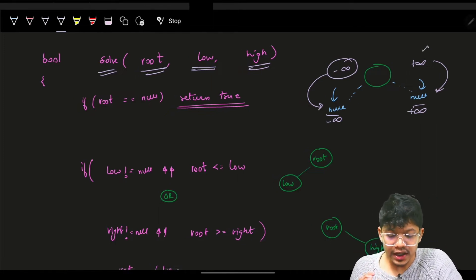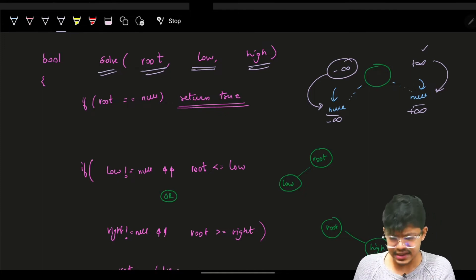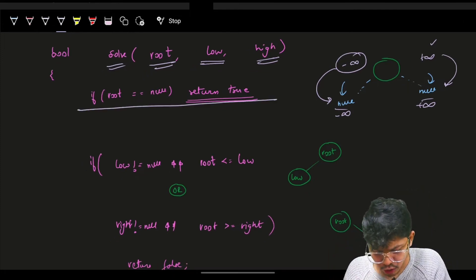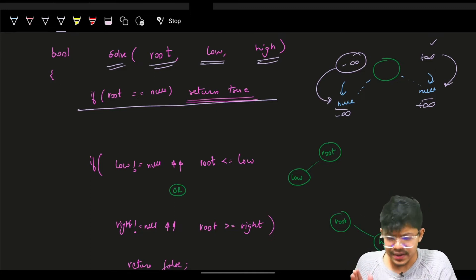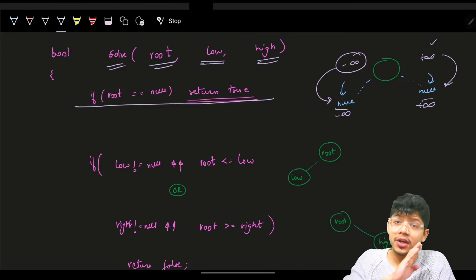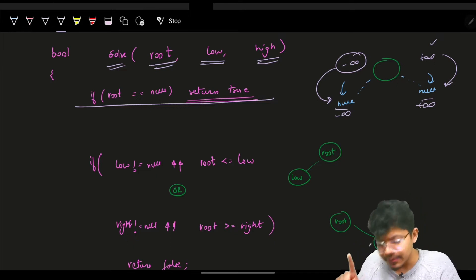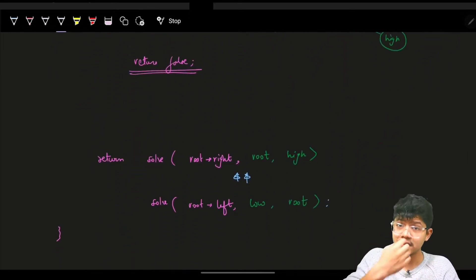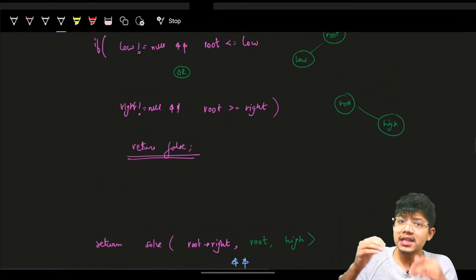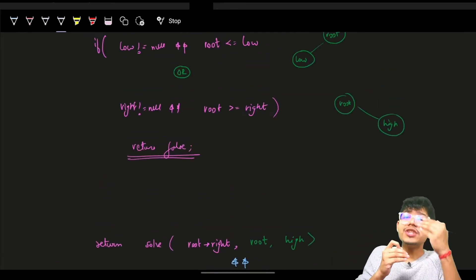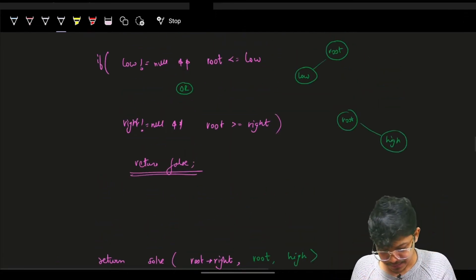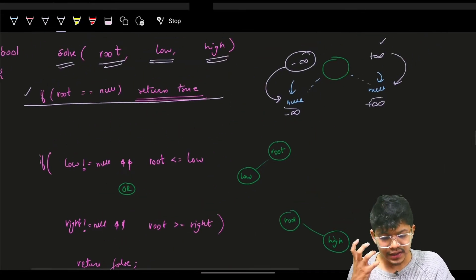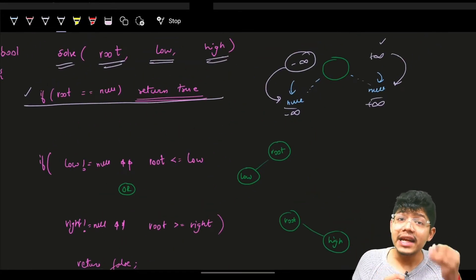The base case: if the node is null, simply return true. I recommend putting the main recursive condition first and then the base case, but let's discuss when the BST will be invalid.